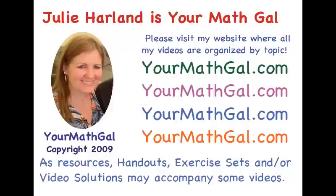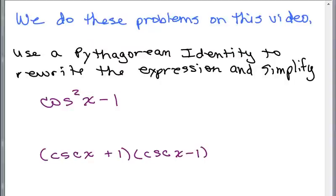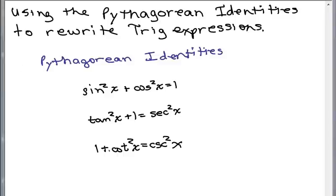This is YourMathGal, Julie Harland. Please visit my website at yourmathgal.com where all of my videos are organized by topic. On this video, we do the following two problems. We're going to use Pythagorean identities to rewrite some trig expressions. Here are the three Pythagorean identities. They come from the very first one, which is also called the fundamental identity.